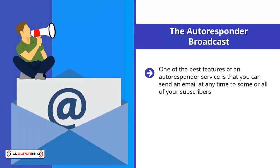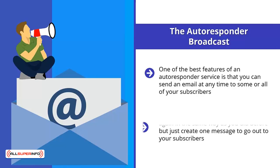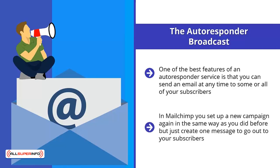One of the best features of an autoresponder service is that you can send an email at any time to some or all of your subscribers. It doesn't matter how many subscribers you have, your autoresponder service will send your email to all of them, or those that you designate. In MailChimp, you set up a new campaign again in the same way as you did before, but just create one message to go out to your subscribers.